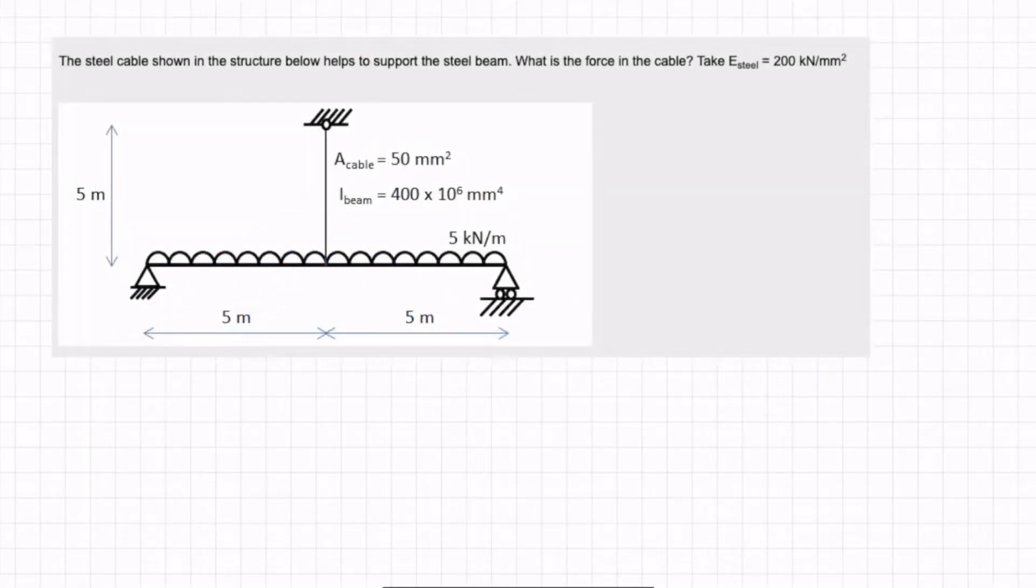Here we have another question from the iStructy Structural Behaviour course, or as it's now called, the Structural Behaviour quiz. The steel cable shown in the structure below helps to support the steel beam. What is the force in the cable? Take the Young's modulus of steel to be 200 kilonewtons per millimetre squared.